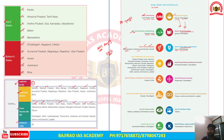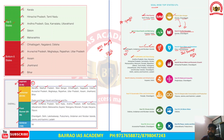The Union Government has started the Jal Jeevan Mission, with the objective of providing piped drinking water to all rural households by 2024. Students should go through all SDGs and the states performing better on each goal, as the UPSC CDS exam 2023 had a question about which states were top performers in terms of zero hunger.